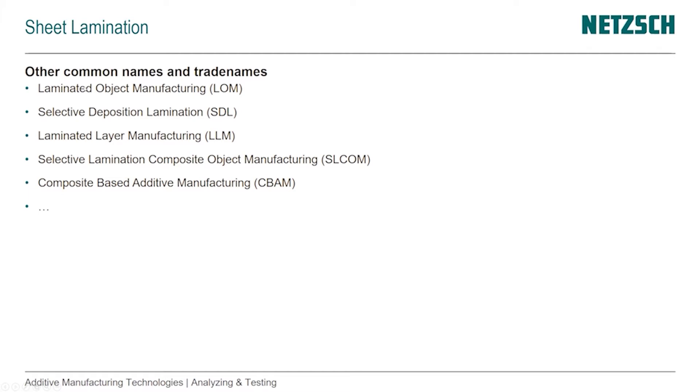It's often used to make colored parts. Recently there was also a development to create structural parts using fiber-reinforced sheets, which we'll talk about on the last slide. The first name coined for this process was Laminated Object Manufacturing, or LOM. It's also been called Selective Deposition Lamination (SDL) and Laminated Layer Manufacturing (LLM). For composite processes, EnvisionTEC coined Selective Lamination Composite Object Manufacturing, or SLCOM.